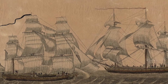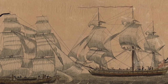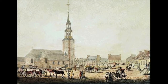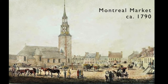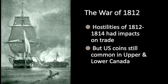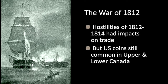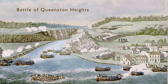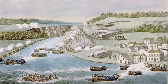Soon the US dollar was competing with the Spanish dollar in international trade, and US coins began to circulate in the remaining British colonies as trade continued between them, much as it had done in the pre-revolutionary period. Montreal, for example, had extensive trade with New York. The War of 1812 put a damper on trade between the United States and the British colonies, including cutting off supplies of US coinage, which had become an extremely important part of the coinage system in the colonies.